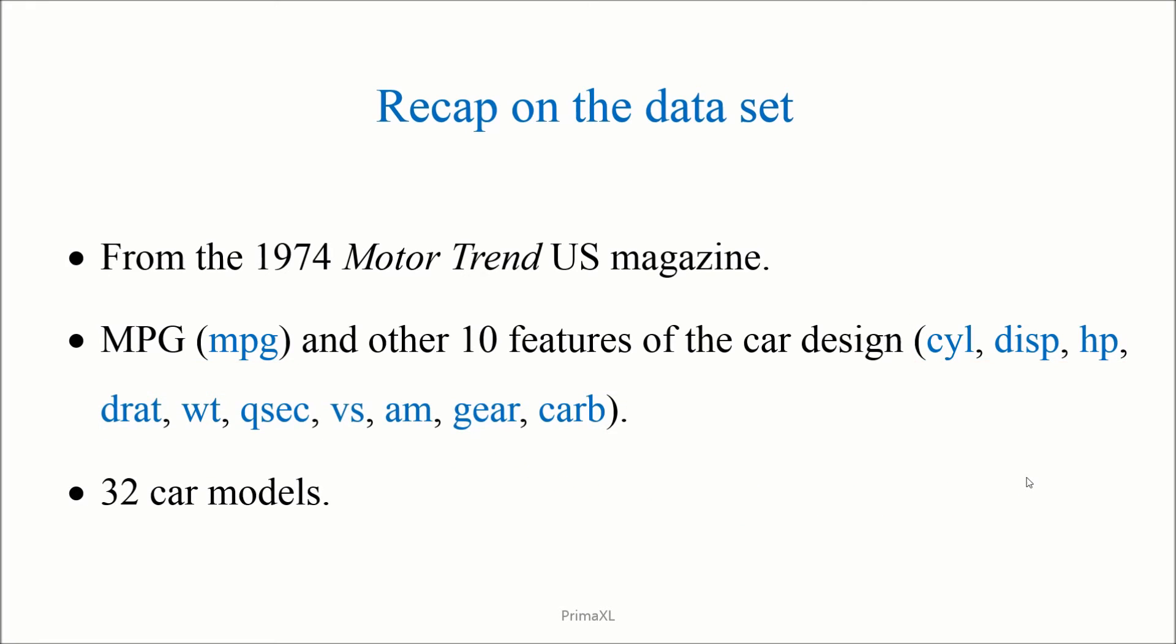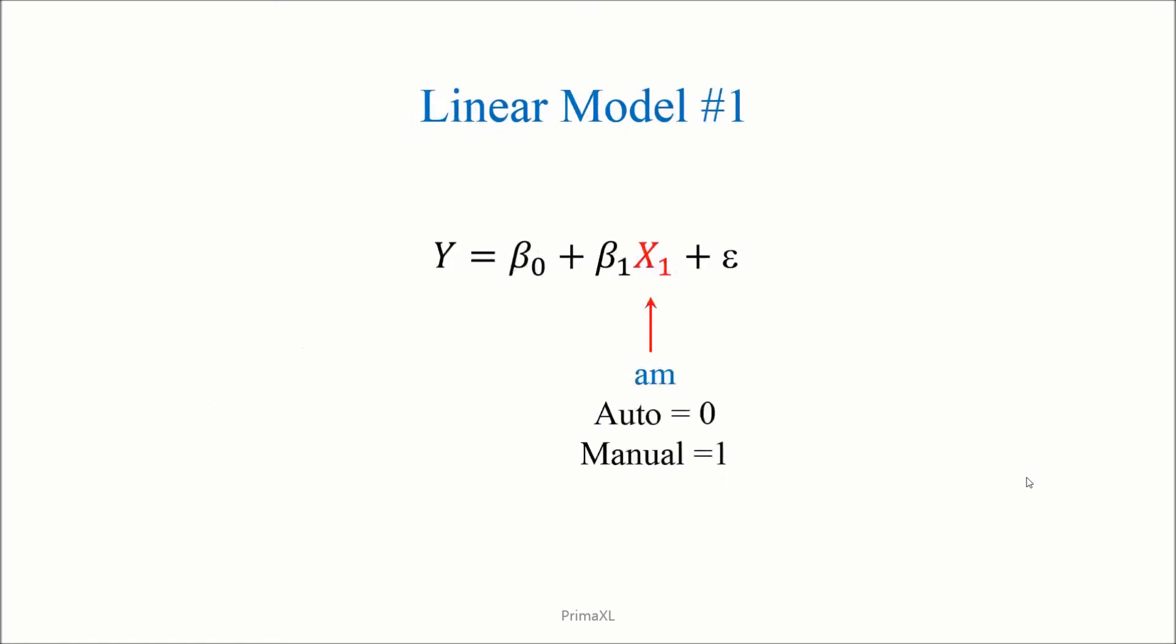MPG would be the dependent variable and others would be the possible independent variables. In total, we have 32 car models. Now, we'll go through the same linear models we had applied in the previous episode and do the diagnostics. The first model has a single independent variable which is AM. AM is the so-called dummy variable which can be either 0 or 1 depending on the transmission type of the car.